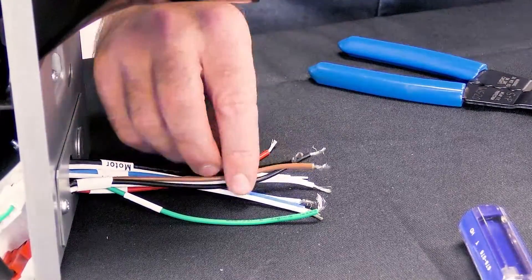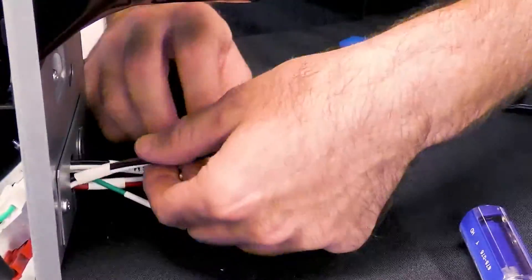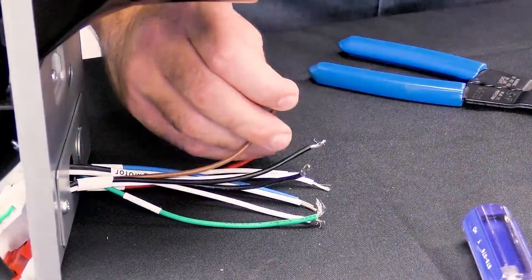Next, connect the brown wire from the control module to the load side of the switch.